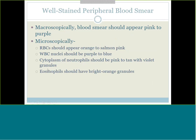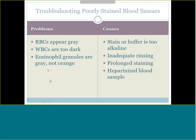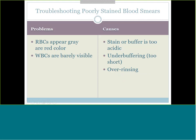There are times you don't do a good job staining. If red cells look gray, white cells are too dark, and eosinophil granules are gray, your stain was too alkaline - wrong pH balance - or you didn't rinse it well enough, or you did prolonged staining. You can have the opposite where cells are too pale or red and white cells are barely visible - then the stain might be too acidic, or you understained, or overrinsed. Be aware of those problems and the causes.